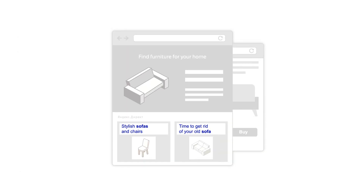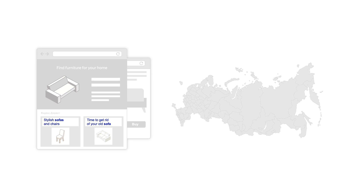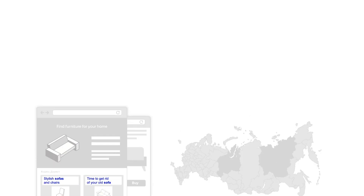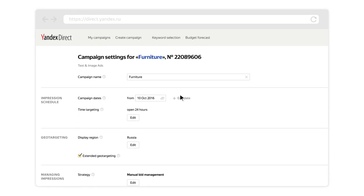If your ad appears in ad networks, customers who live in your selected regions will see your ads even if they are currently located in another region. You can manage this option in your campaign settings.